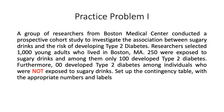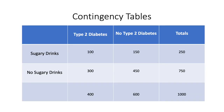This is our first practice problem. A group of researchers from Boston Medical Center conducted a prospective cohort study to investigate the association between sugary drinks and the risk of developing type 2 diabetes. Researchers selected 1,000 young adults who lived in Boston, Massachusetts. 250 were exposed to sugary drinks, and among them only 100 developed type 2 diabetes. Furthermore, 300 developed type 2 diabetes among individuals who were not exposed to sugary drinks. The contingency table has been filled with the appropriate numbers and labels. Kindly review the video on contingency tables to learn how to fill the boxes with the correct numbers and labels.